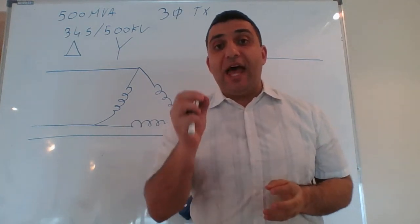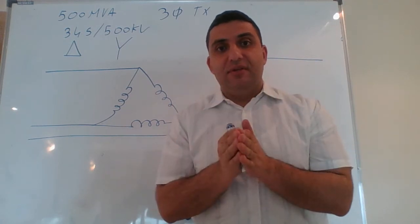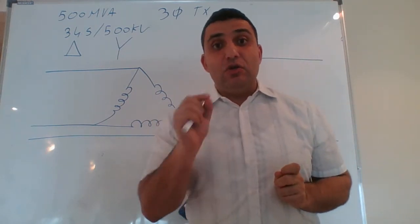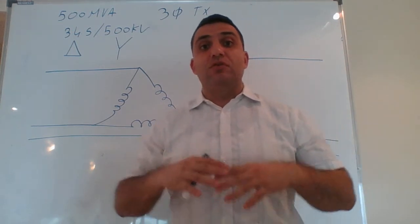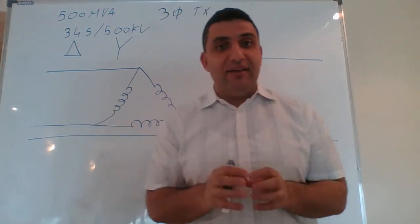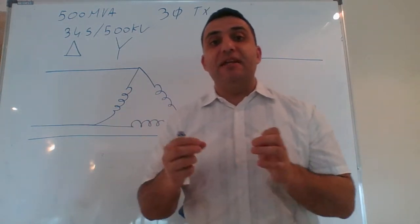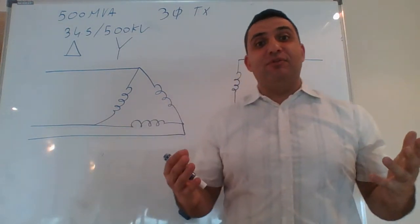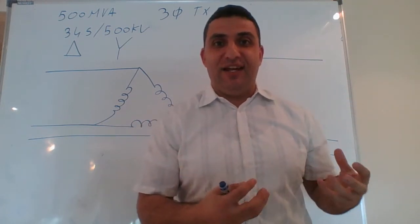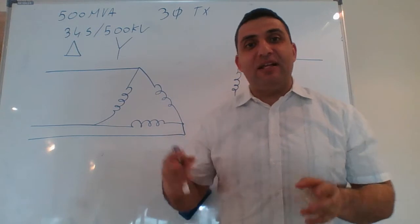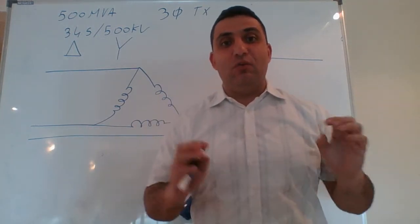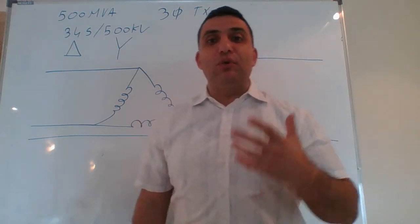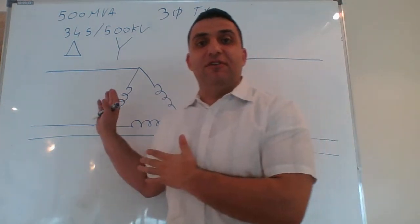This magnetizing inrush only happens on the primary side, not on the secondary side. Engineers noticed that the inrush current is made almost fully of harmonics, while the fault current is made almost purely from fundamental frequency. That's why it is possible for us to design a harmonic restraint relay to avoid tripping our differential relay under inrush current, which would be a false trip.